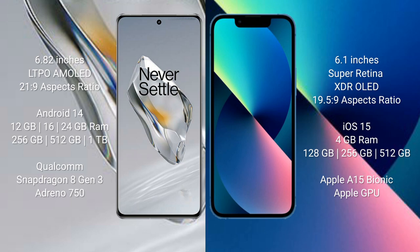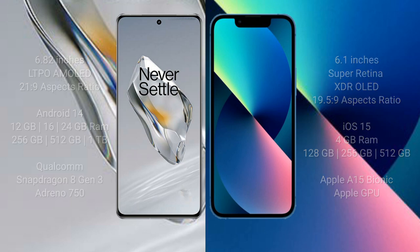OnePlus 12 comes with 12GB, 16GB, or 24GB RAM and 256GB, 512GB, or 1TB internal storage, powered by the Qualcomm Snapdragon 8 Gen 3 processor and Adreno 750 GPU. iPhone 13 comes with 4GB RAM and 128GB, 256GB, or 512GB internal storage, with the Apple A15 Bionic processor and Apple GPU.